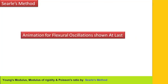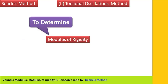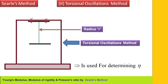Now we will see the torsional oscillations method for finding the modulus of rigidity of the material of the wire. In this case, bar 2 is free to oscillate while bar 1 is attached and tied with threads to the fixed support. This wire is the material for which we have to find the modulus of rigidity. The radius of the wire, small r, is to be measured. This method is called the torsional oscillations method, devised by scientist Searle — that is why it is called Searle's method.